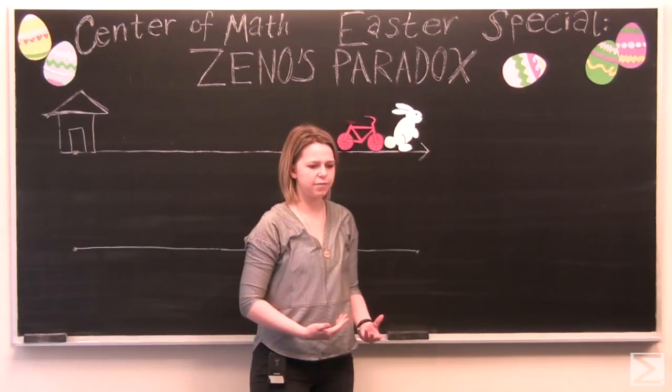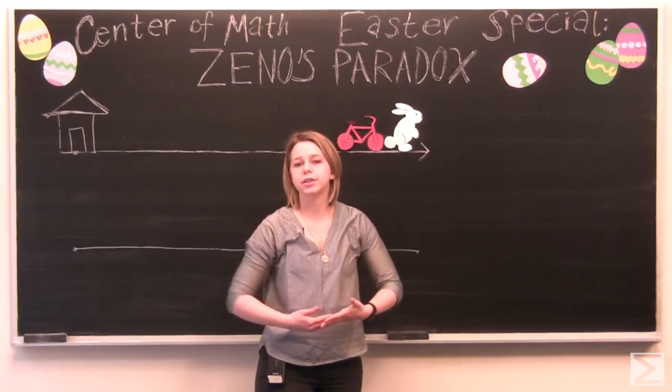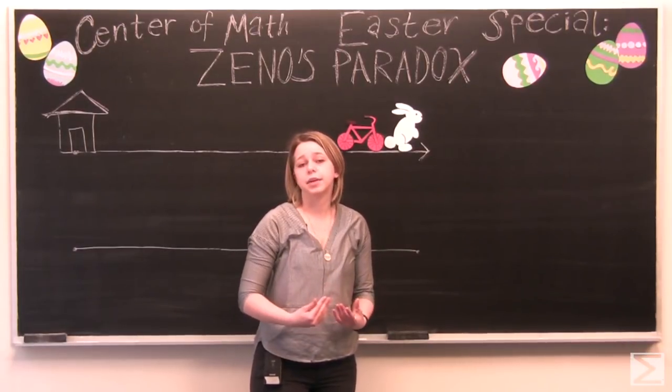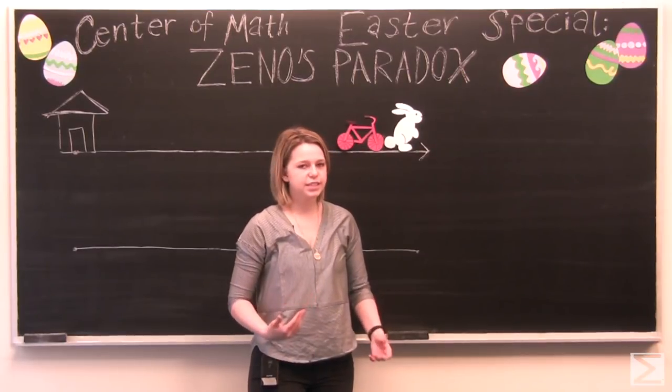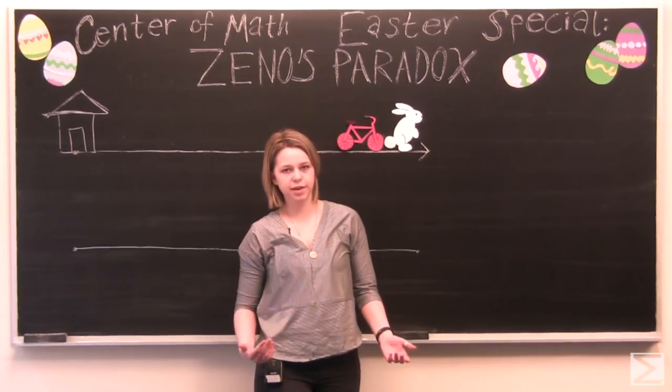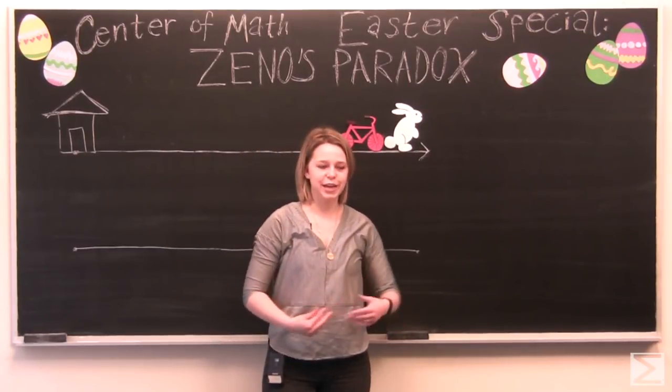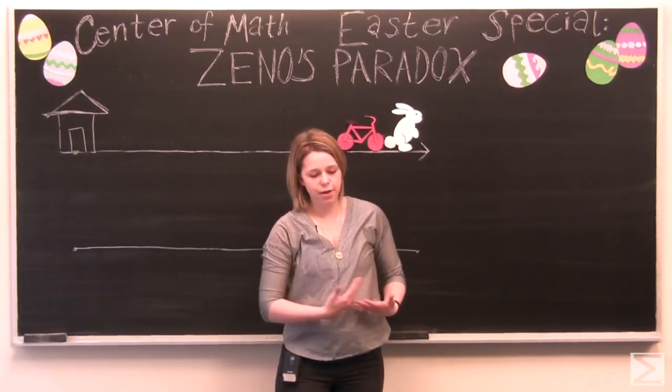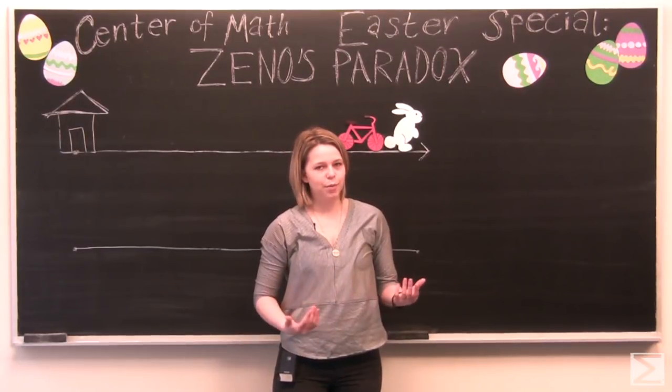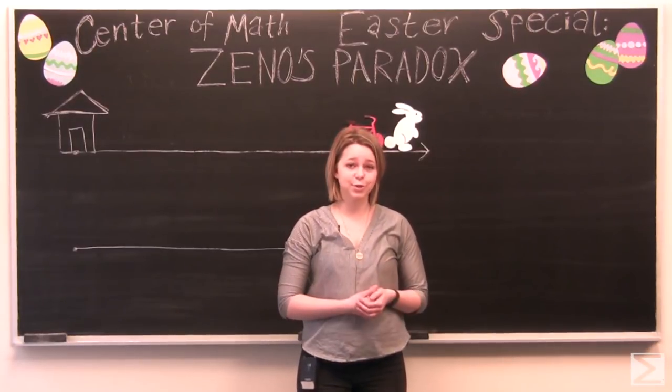This will continue even if John only has to catch up one centimeter. The Easter Bunny is going to travel 0.5 centimeters in the time that it took John to catch up. So does this mean that John will never catch up to the Easter Bunny? We live in the real world so we know that if there are two racers the faster racer is going to overtake the slower racer. But this problem is known as one of, this is the most famous of Zeno's paradoxes.